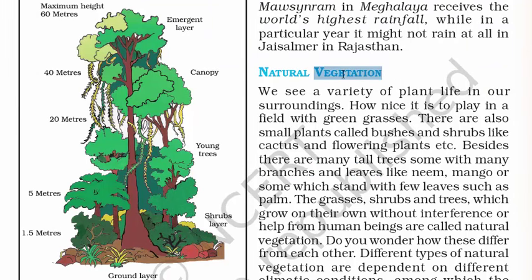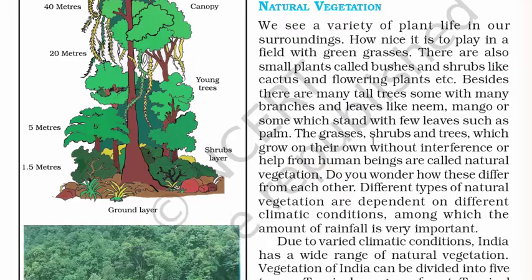Coming to the next topic — natural vegetation. Plants are collectively known as vegetation. Natural vegetation is defined as the grasses, shrubs and trees which grow on their own without interference or help from human beings. We are not talking about small gardens we grow near our houses, but much larger forests around the world that grow on their own every year.